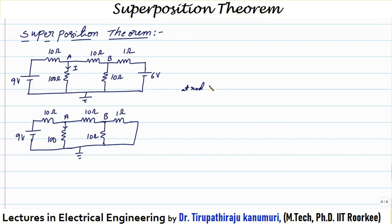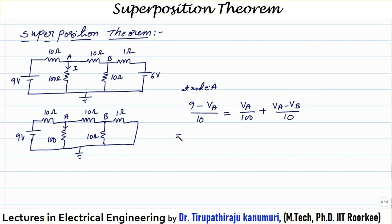At node A, we can write: (9 minus VA) divided by 10 — current entering — equals VA divided by 100 plus (VA minus VB) divided by 10. Simplifying, you get 21·VA minus 10·VB equals 90. Let us take this as equation number 1.